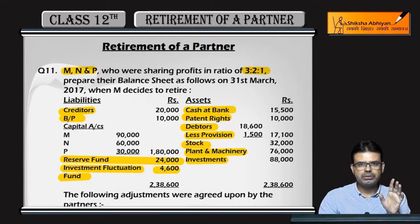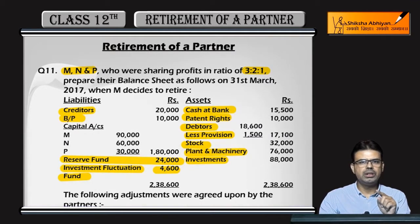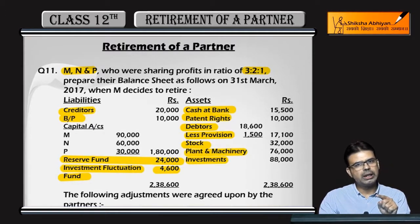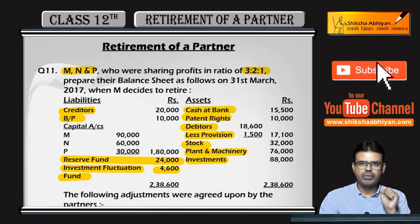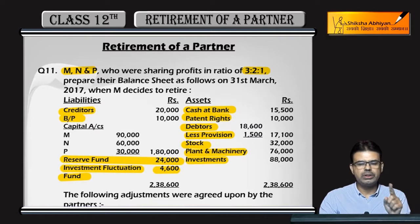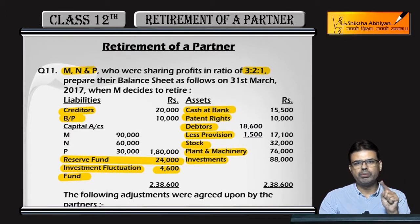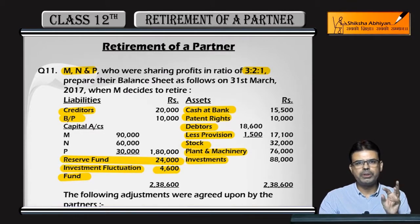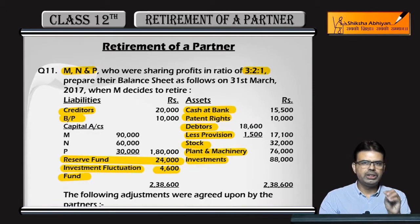Whenever Investment Fluctuation Fund comes up, I'm explaining it separately. Investment Fluctuation Fund is a separate account opened to absorb profits and losses arising from fluctuations in the market value of investments. If there is any up-down in the market value of investments and any loss occurs due to that, we charge that loss from the Investment Fluctuation Fund instead of from revaluation.